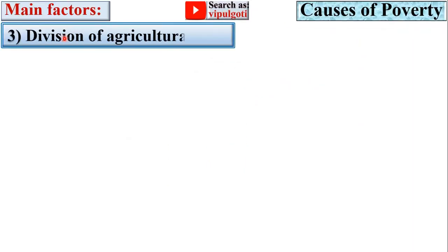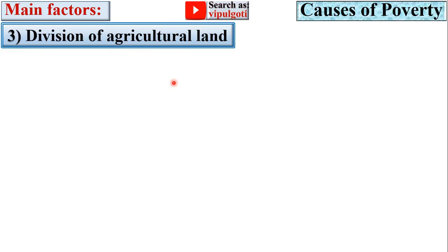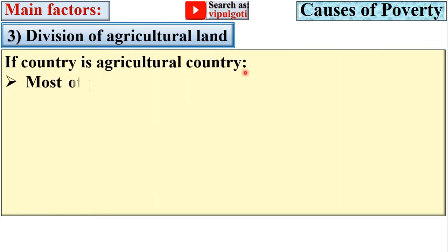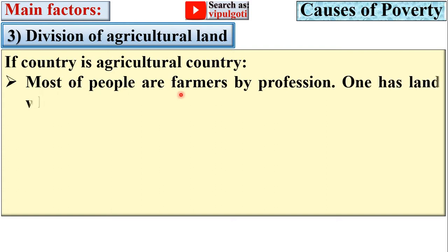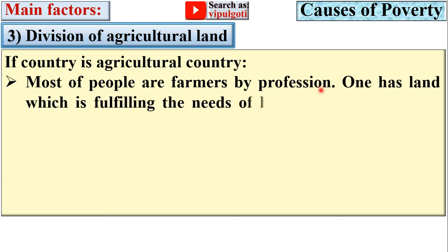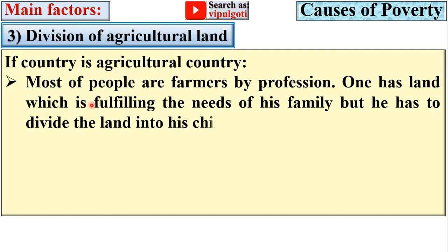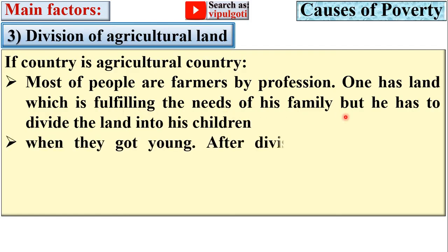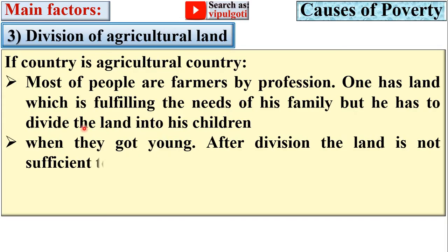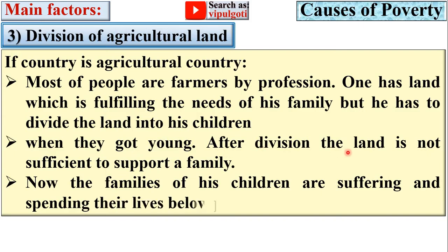Next, division of agriculture land. If a country is an agriculture country, most people are farmers by profession. One has land which fulfills the needs of his family, but he has to divide the land among his children when they grow up. After division, the land is not sufficient to support a family, and those families end up spending their lives below the poverty line.